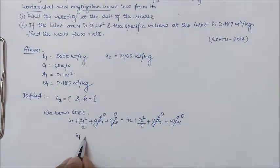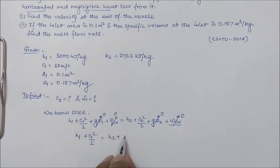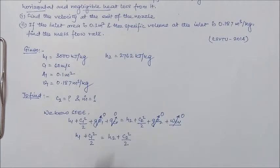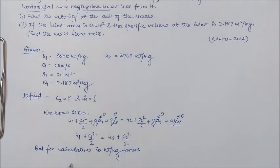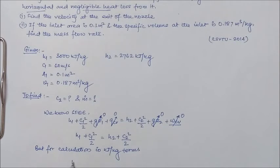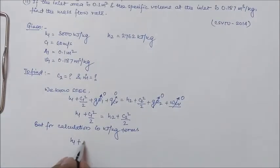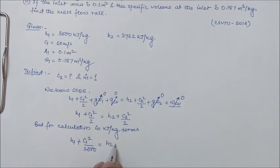So, our equation becomes H1 plus C1 square by 2 is equal to H2 plus C2 square by 2. Okay. But for calculation in kilojoule per kg terms, we have to convert this in kilojoule per kg term as H1 plus C1 square by 2,000. Right? So, we got this.